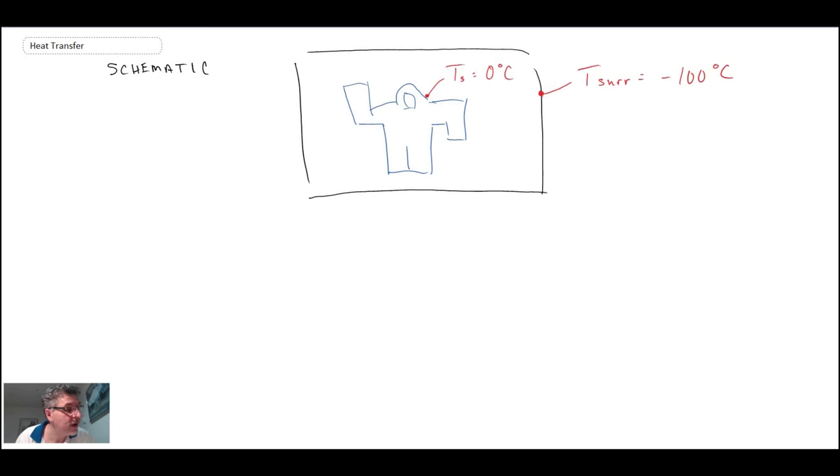So there we have the astronaut in her space suit out in space. We have vacuum conditions so there is no mechanism of convection going on. The only form of heat transfer is going to be radiative heat transfer.